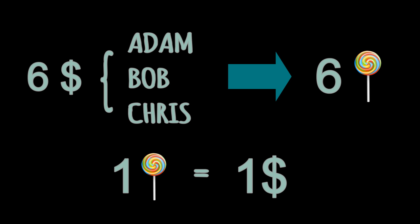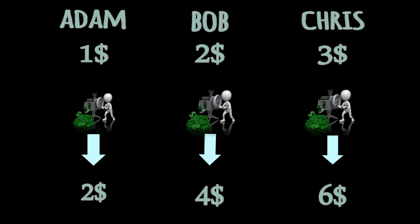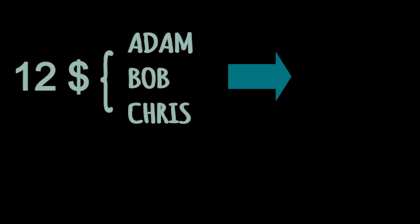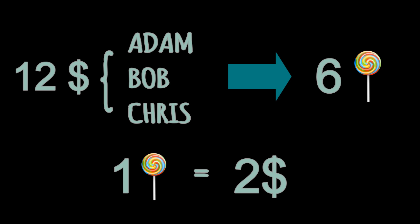Therefore, the cost of each candy is $1. The government then gave away cash-making machines to its citizens. Taking this as an advantage, Adam, Bob, and Chris doubled their money — now they have $2, $4, and $6 respectively, totaling $12. But the amount of candies available is still six, because money cannot increase resources or production efficiency — it can only increase spending power.